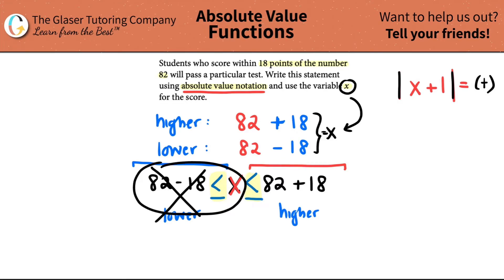So when you're actually trying to get it into absolute value notation, don't even look at the lower part. Just look at the higher part. So that's now just taking it as saying x is less than or equal to 82 plus 18.